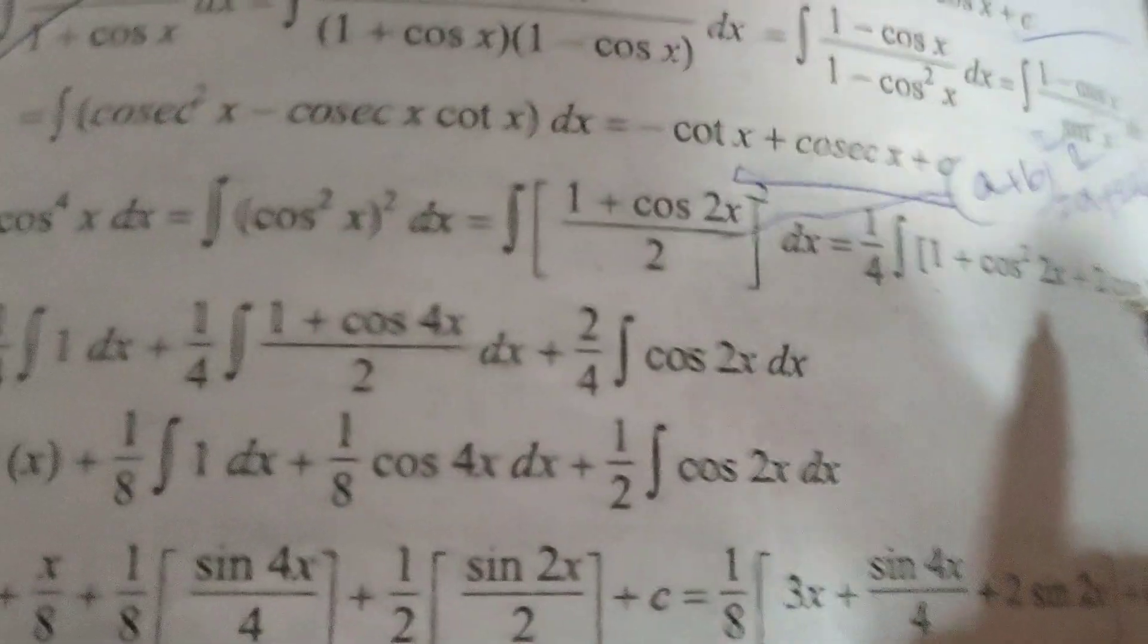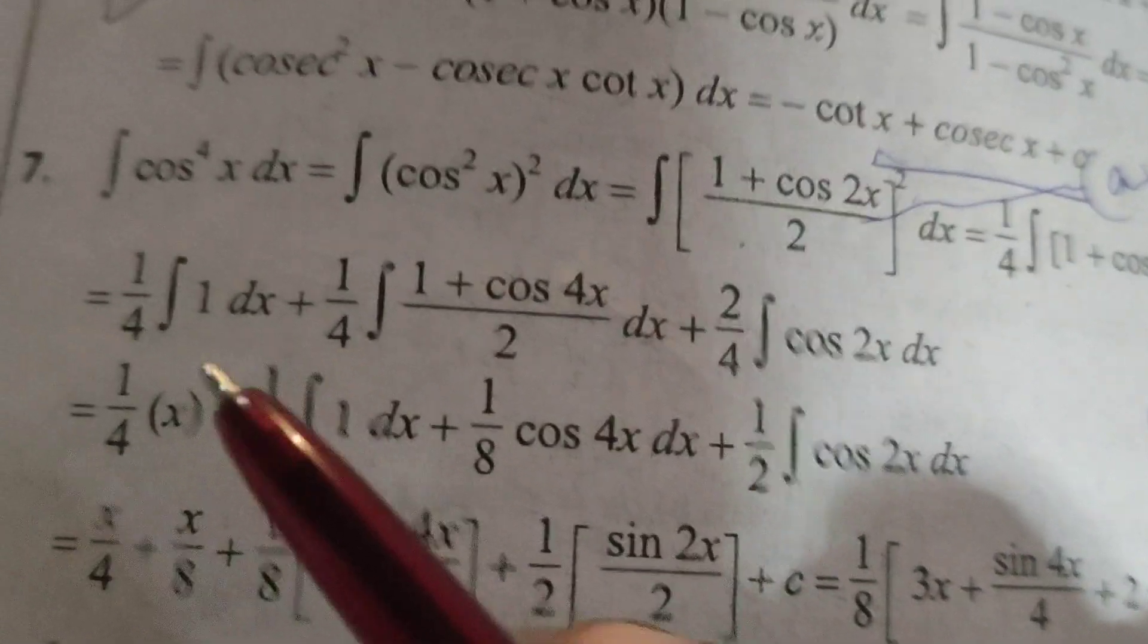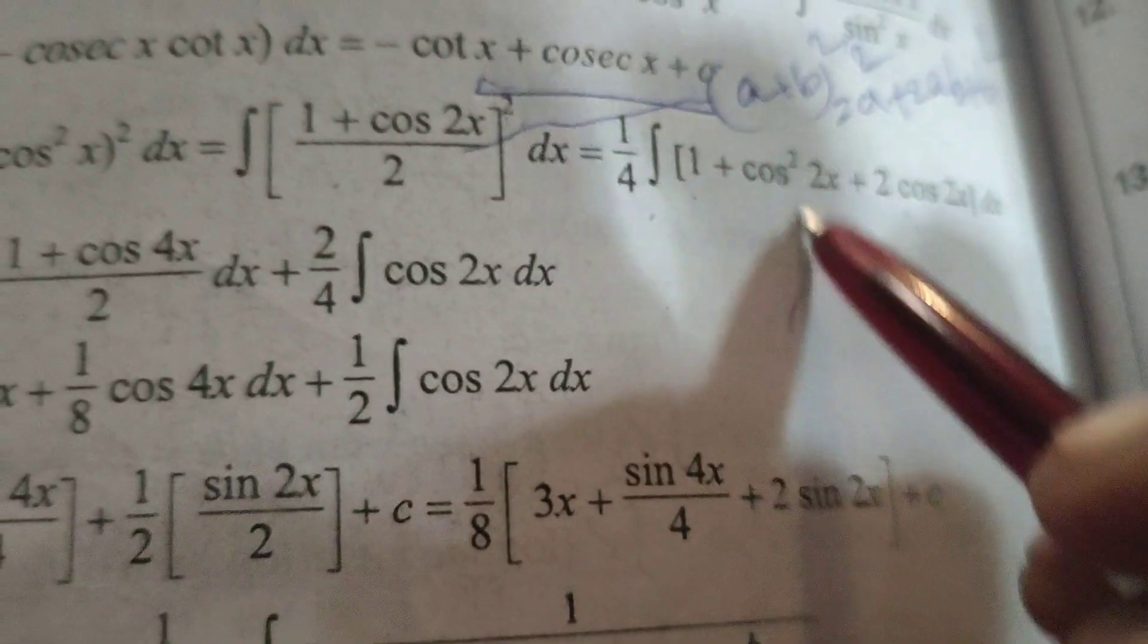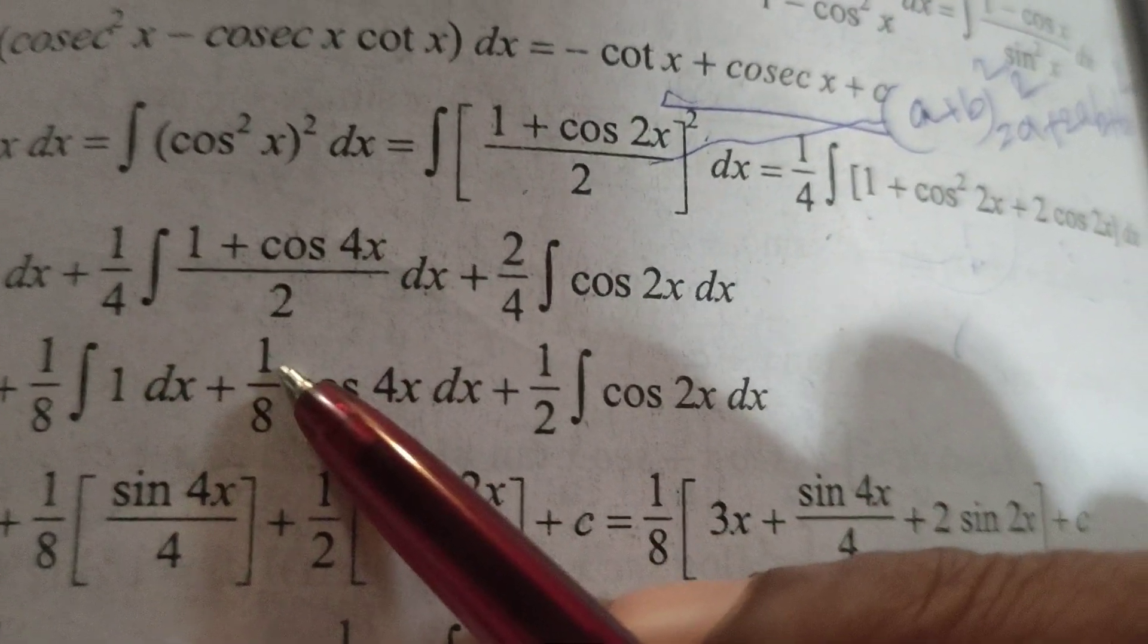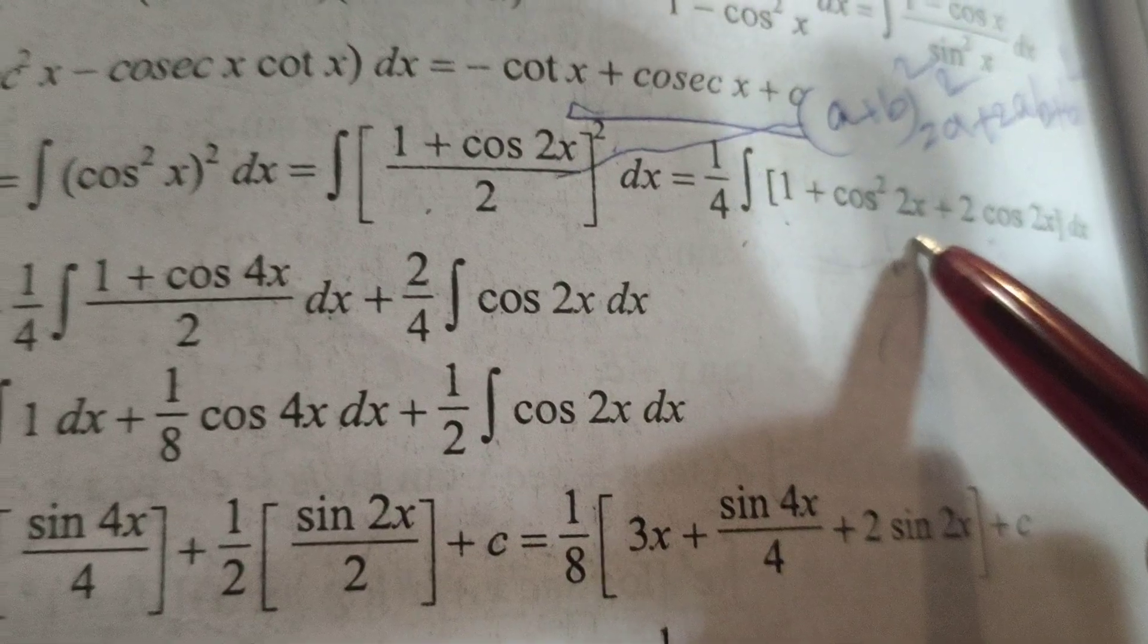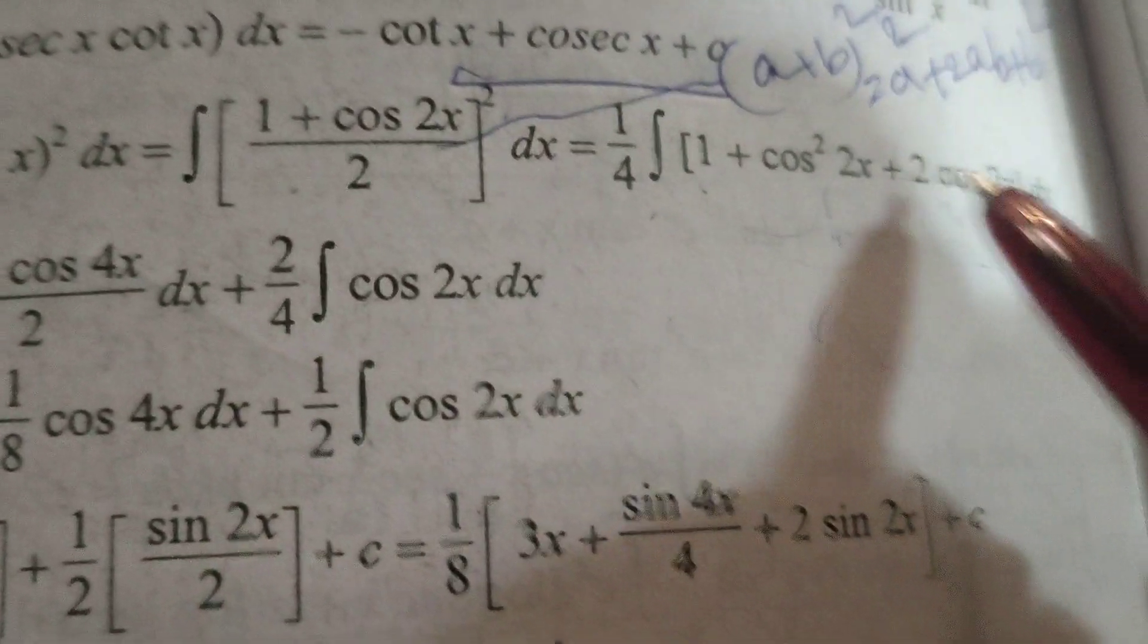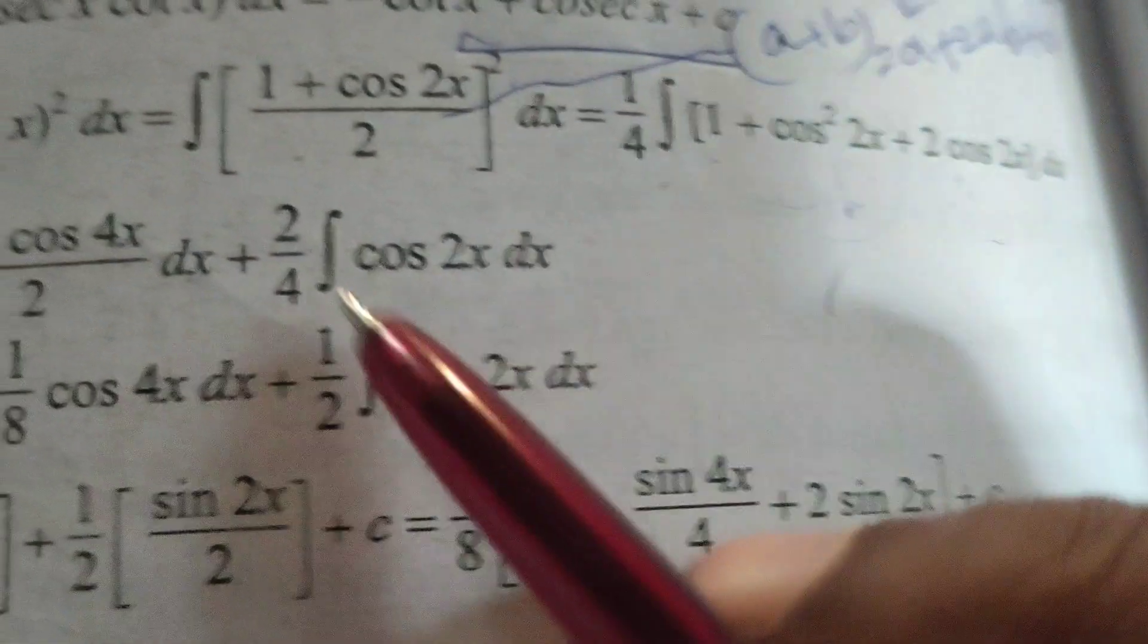Next, 1 by 4 write integral of 1 dx plus 1 by 4 again multiplied into this term. Cos squared 2x means write the formula 1 plus cos 4x by 2. In place of x, 2x is there, so 1 plus cos 4x by 2 dx plus here 2 is there. Therefore 2 by 4 integral cos 2x dx.